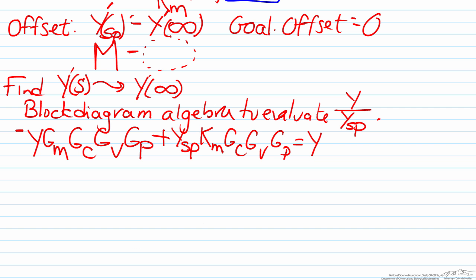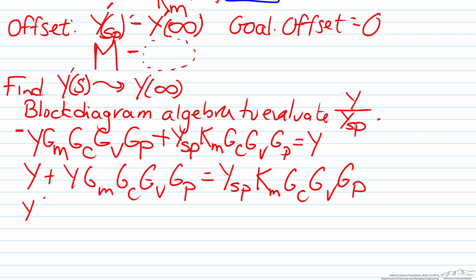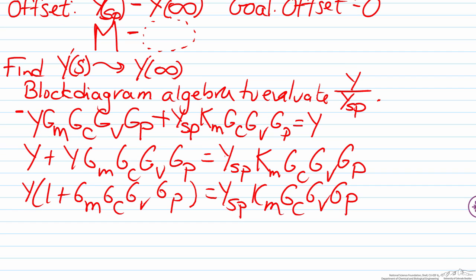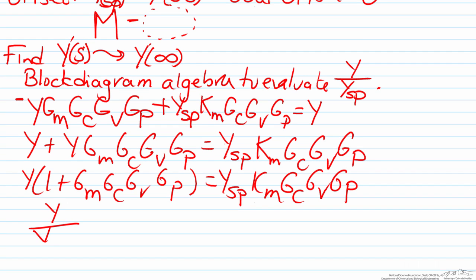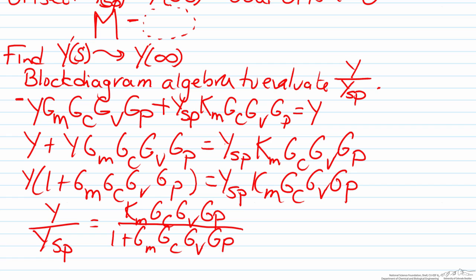So we can rearrange this a bit. We can isolate the Y, and then finally just rearrange a few things to get Y over Ysp equals Km Gc Gv Gp divided by one plus Gm Gc Gv Gp.